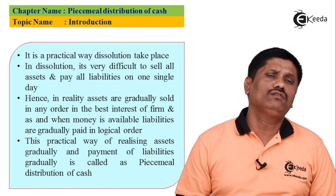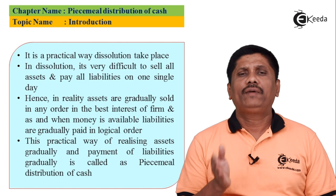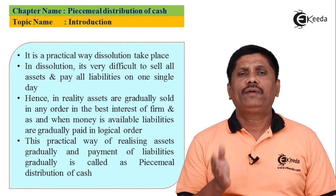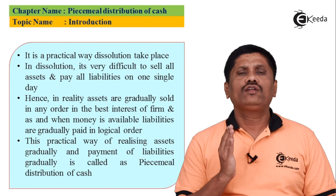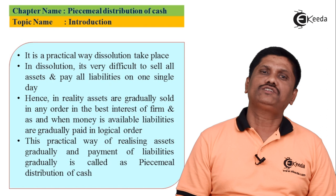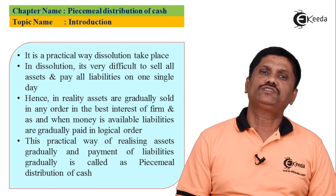In the Maximum Loss Method, loss is derived first, subtracted, and then payment is made toward the positive capital of partners. This is the theoretical part; the practical understanding will come when we solve questions. Please watch our videos on questions on piecemeal distribution of cash. Thank you for watching — please subscribe to our channel and press the bell icon for latest notifications.